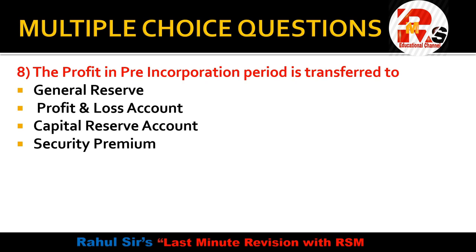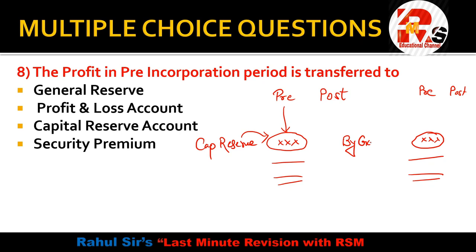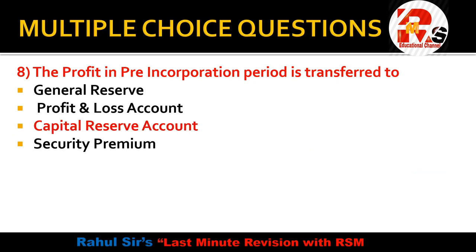Next question: the profit in the pre-incorporation period is transferred to — general reserve, profit and loss, capital reserve, or security premium? In the PPI statement, we have a pre side and a post side on the credit. Whatever profit we get in the pre-incorporation period is called capital profit, and since it is a capital profit it is transferred to capital reserve. The right answer is capital reserve.